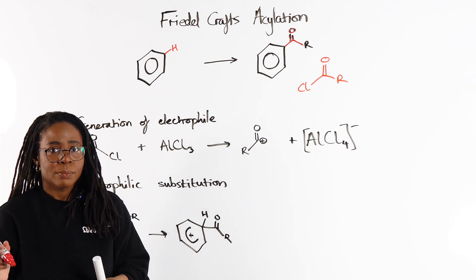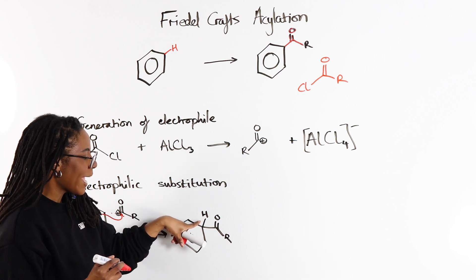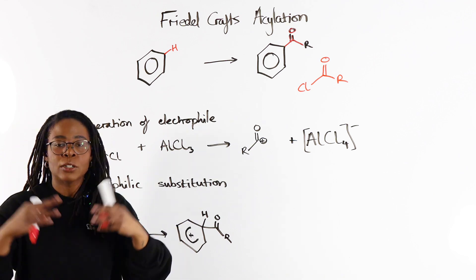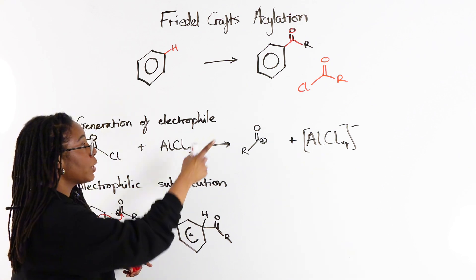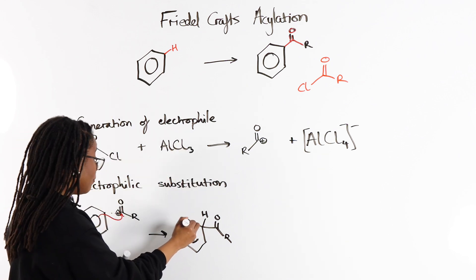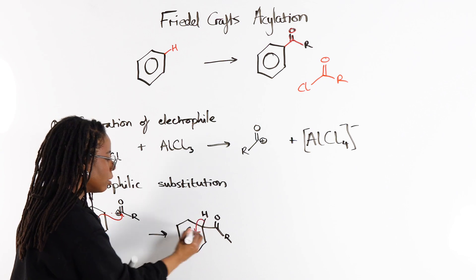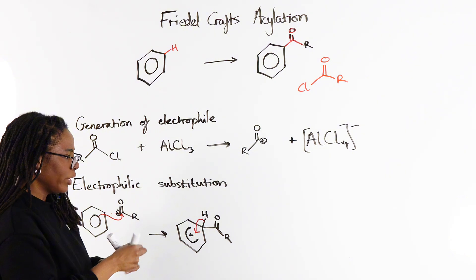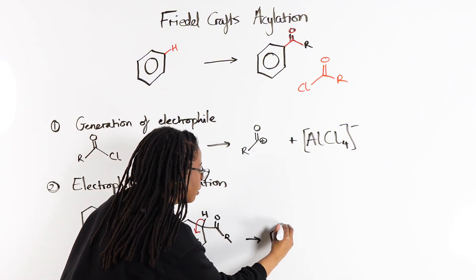As our second and final curly arrow, we need this H to fall off so that we can regenerate the delocalized pi ring and end up with our final substituted product. Second curly arrow from the C-H bond into our ring and we end up with what we wanted.